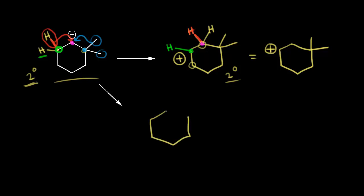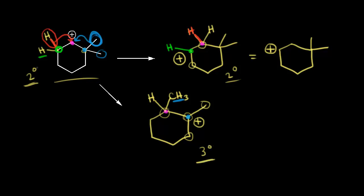Let's try a methyl shift and draw in our ring. One of the methyl groups remains on the carbon in blue, and the other one moves over to this carbon — that's the one in blue that underwent our methyl shift. On that carbon in magenta, there was originally a hydrogen, so let's draw that in. We took a bond away from the carbon in blue, so it gets a plus one formal charge. The carbon in blue is directly bonded to one, two, three other carbons, so this is a tertiary carbocation, which is more stable than a secondary carbocation.